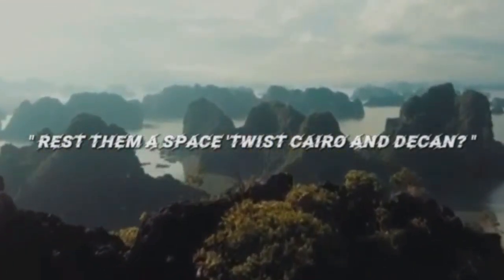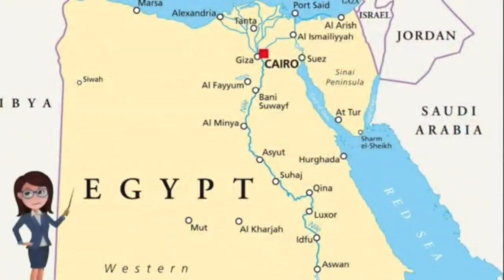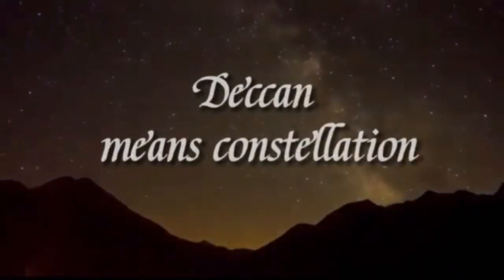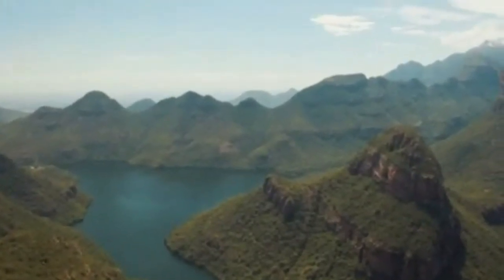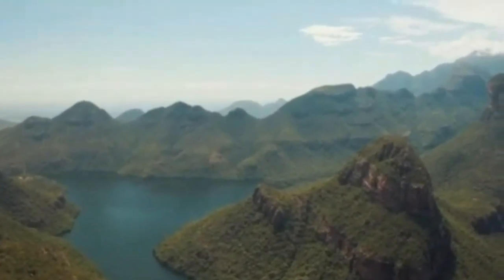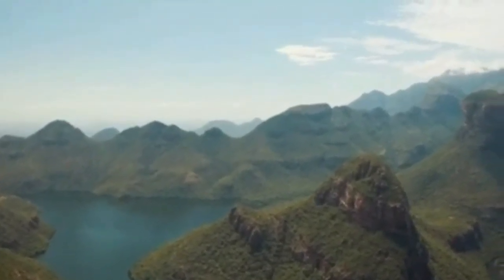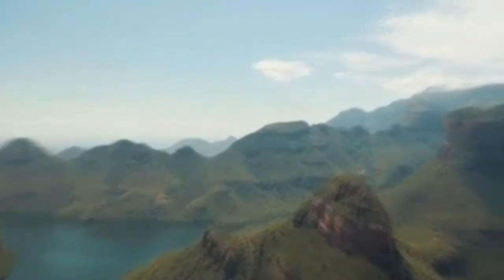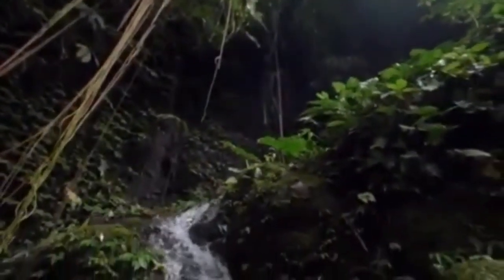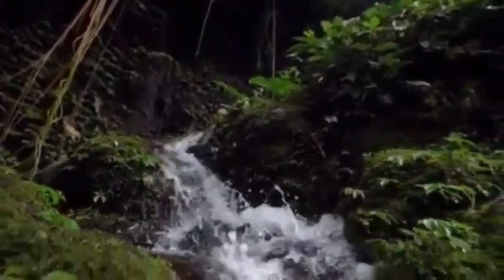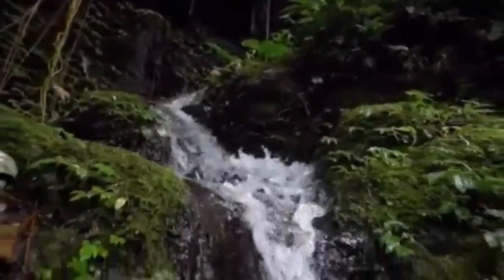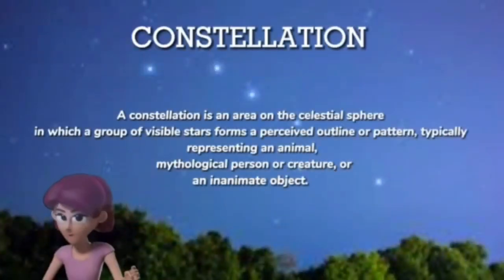In the line 'rest for a space, quest Cairo and decant,' Cairo refers to the place where the river begins, and 'decant' in Egyptian means constellations. According to this line, the river has a rest between the land and the skies.